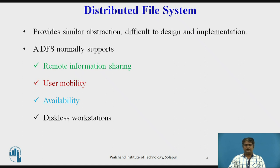User mobility in a distributed system implies that a user should not be forced to work on a specific node, but should have the flexibility to work on different nodes at different times. A distributed file system normally allows this without the necessity of physically relocating secondary storage devices. For better fault tolerance, files should be available even in the event of temporary failure of one or more nodes. To achieve this, a distributed file system normally keeps multiple copies of a file on different nodes; each copy is called a replica.